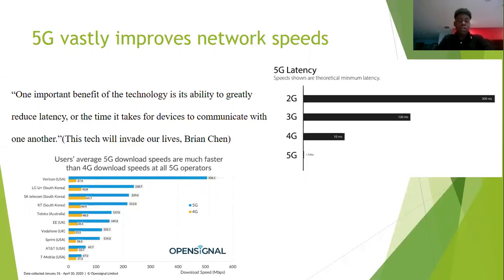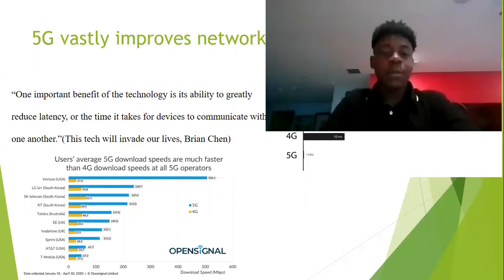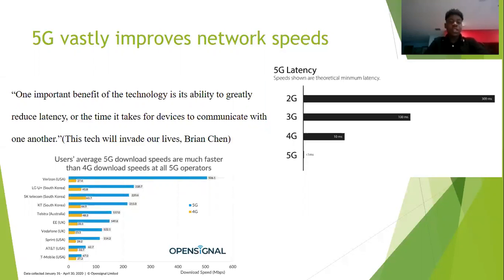On the graph in the lower left, you can see the average download speed for 5G compared to 4G in multiple areas. As you can see in each area, 5G beats 4G in download speeds, which shows how efficient the network speeds are from a global standpoint.